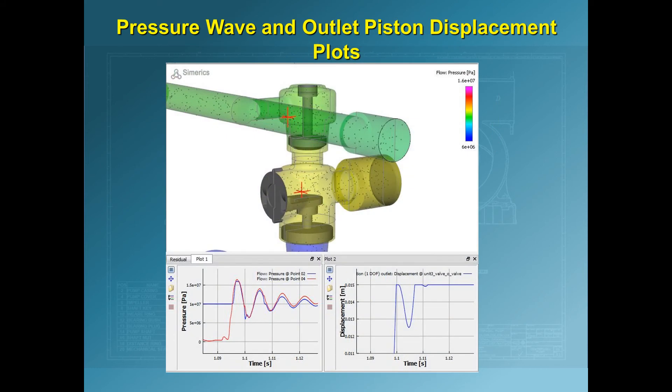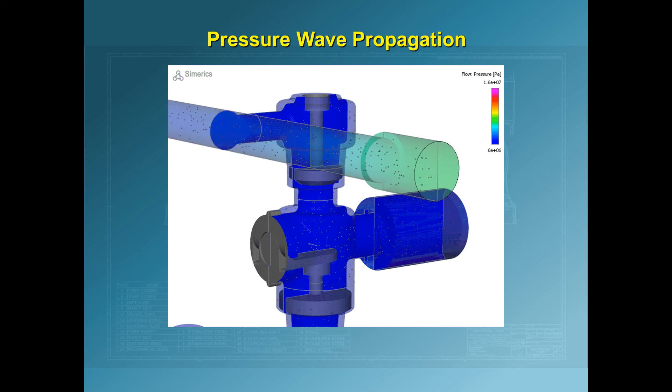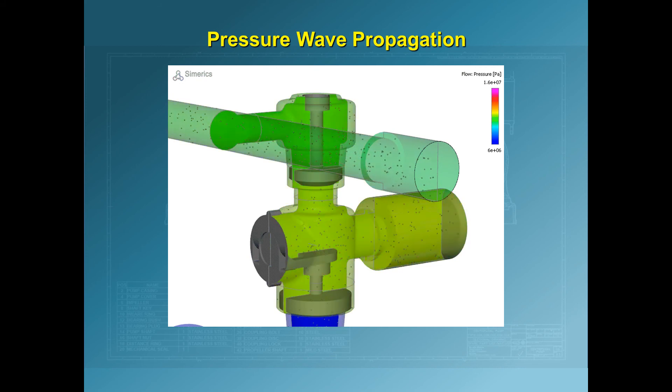Pumplinks can output plots of pressure fluctuations anywhere in the system as well as the displacement of the valves. The lower left shows pressure traces at two points in the flow field located at the red crosses above. The lower right shows a plot of displacement of the outlet valve over a small time interval. The next slide is a slow motion animation of the pressure wave traveling through the device as the valves open and close.